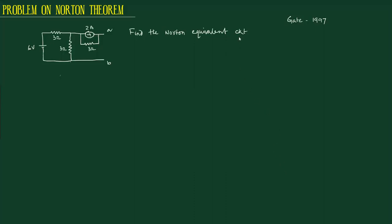Find the Norton equivalent circuit of this given circuit. The Norton equivalent circuit consists of a current source with a resistance in parallel. This will be Rn and this will be In.